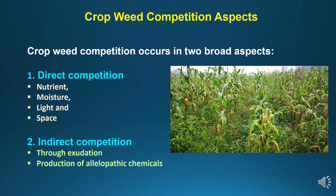Crop-weed competition occurs in two broad aspects: first is direct competition, and second is indirect competition. Under direct competition, the crop competes with weeds for nutrients, moisture, light, and space. As far as indirect competition is concerned, it occurs through exudation, where roots release various chemical exudates which create competition, and there is production of allelopathic chemicals.